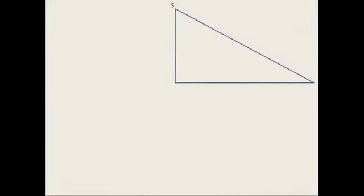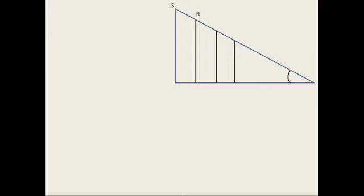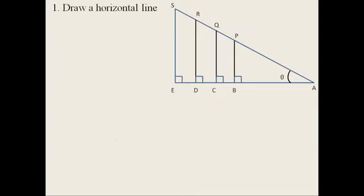So this is a right angle triangle. In this triangle I am taking some perpendicular lines. First I will draw all of these, then I will give the names. Draw a horizontal line first on a paper.